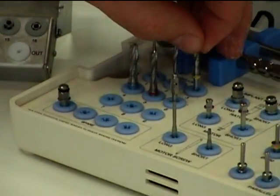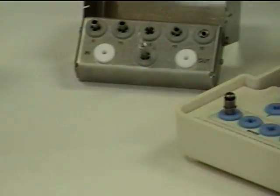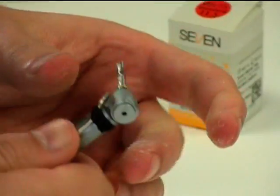Next up, the 2.8 millimeter twist. This time I'll go without the drill stopper, meaning I have to pay attention to the depth markings on the sides of the drill.